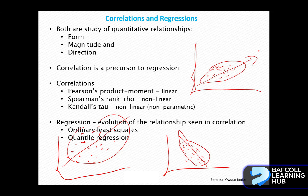When we talk about relationships in quantitative terms, all we know is that the variables are related — we are not interested in which variable depends on the other or which changes first. But if they are related, there's a way to go further to describe the exact evolution of the relationship: whether they move in the same or opposite direction, and to what degree does the change in one correspond with the change in another. This is studied through regression analysis, which means correlation is a precursor to regression. If there's no correlation, you cannot go further to study regression — they study relationships in a stepwise approach.